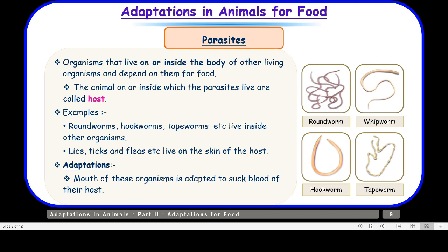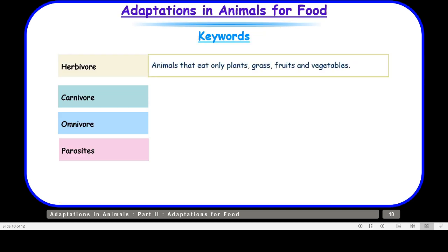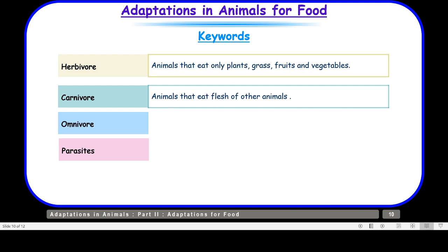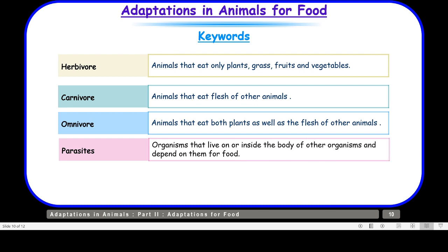Let us look at the keywords. Herbivores are animals that eat only plants, grass, fruits and vegetables. Carnivores are animals that eat flesh of other animals. Omnivores are animals that eat both plants as well as flesh of other animals. Parasites are organisms that live on or inside the body of other organisms and depend on them for their food requirements.